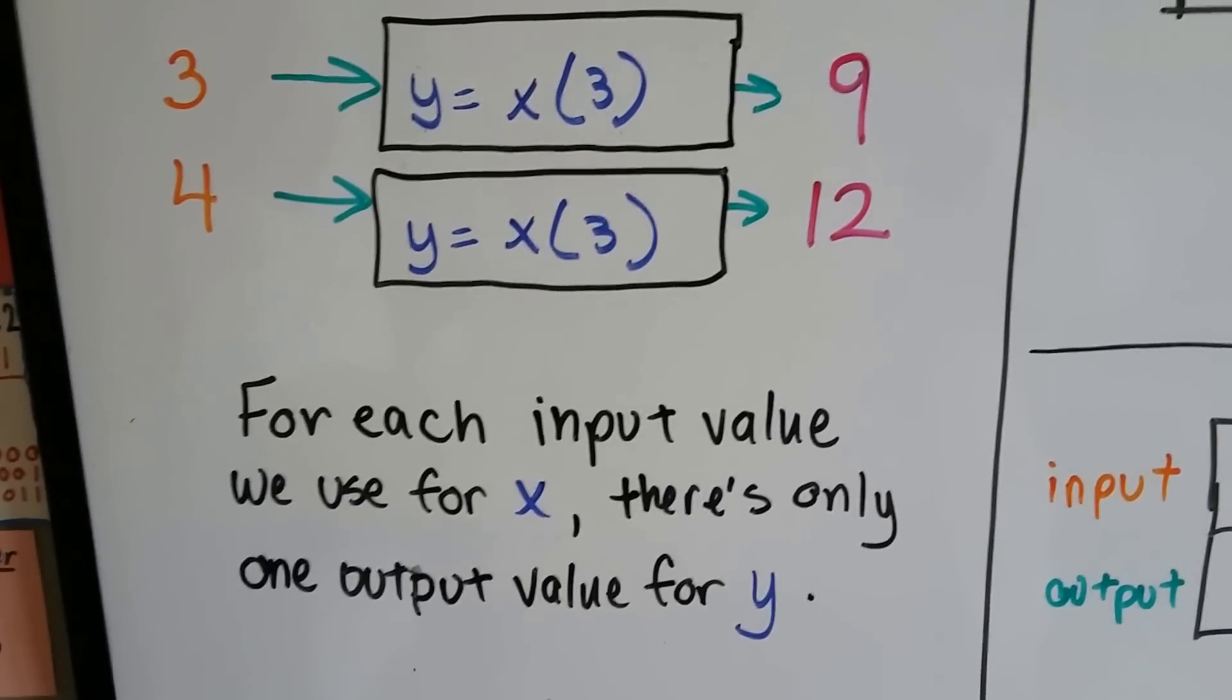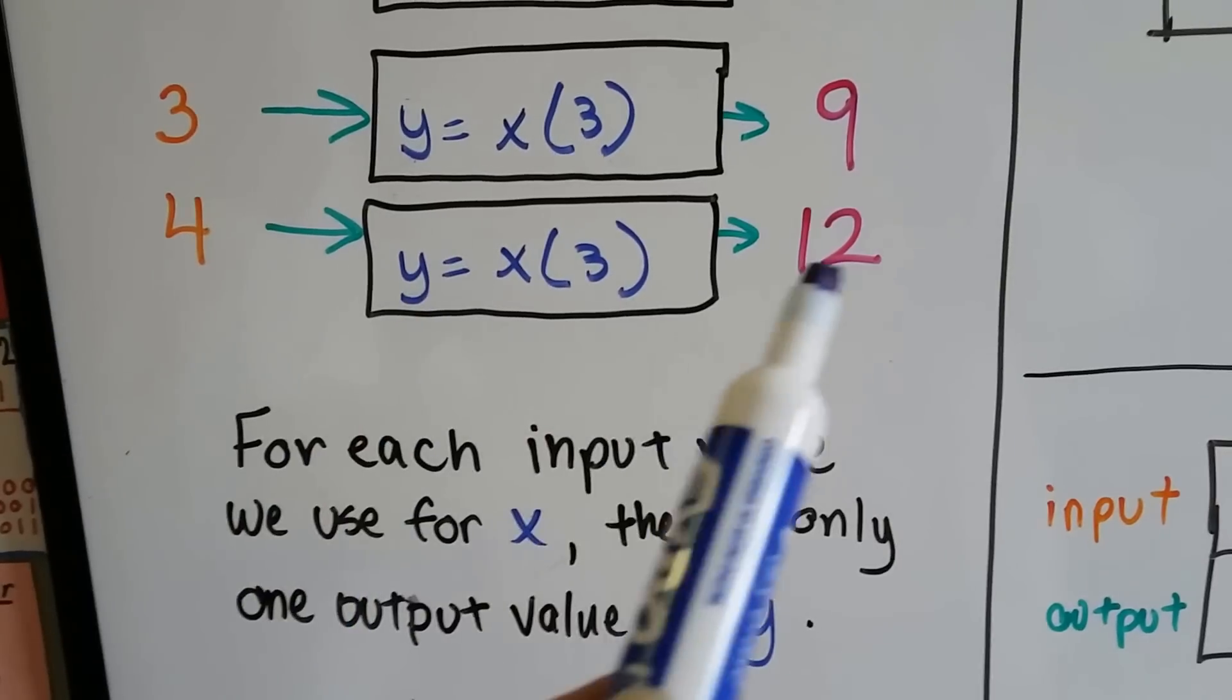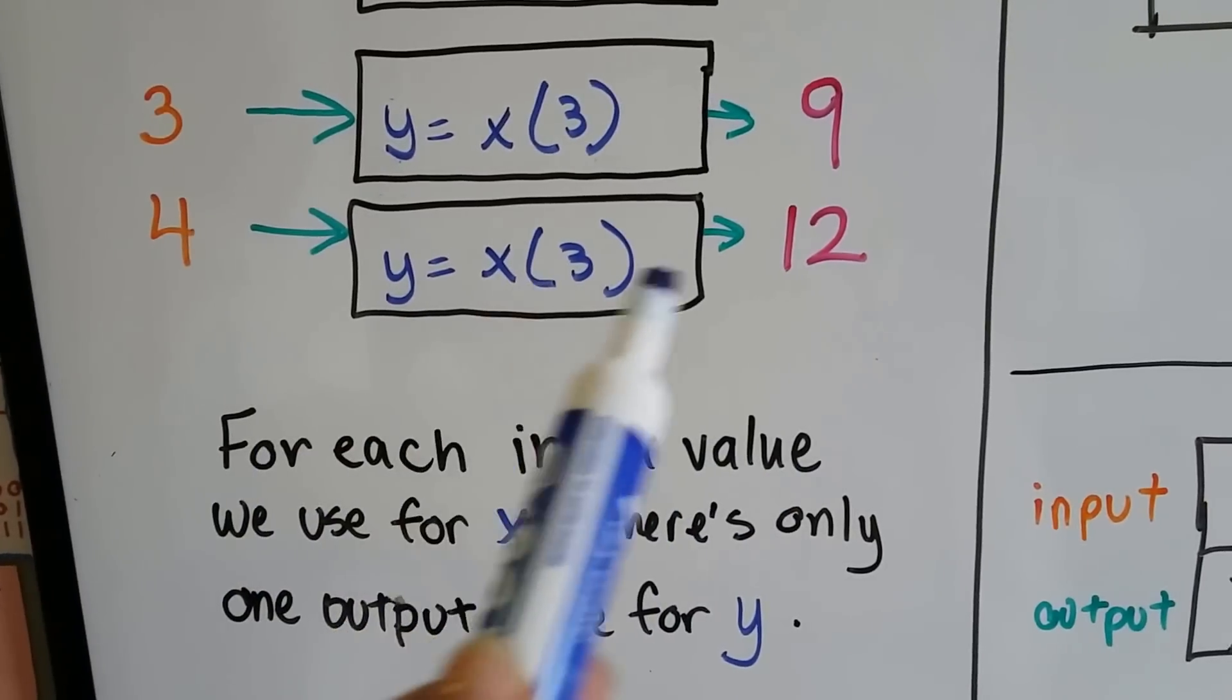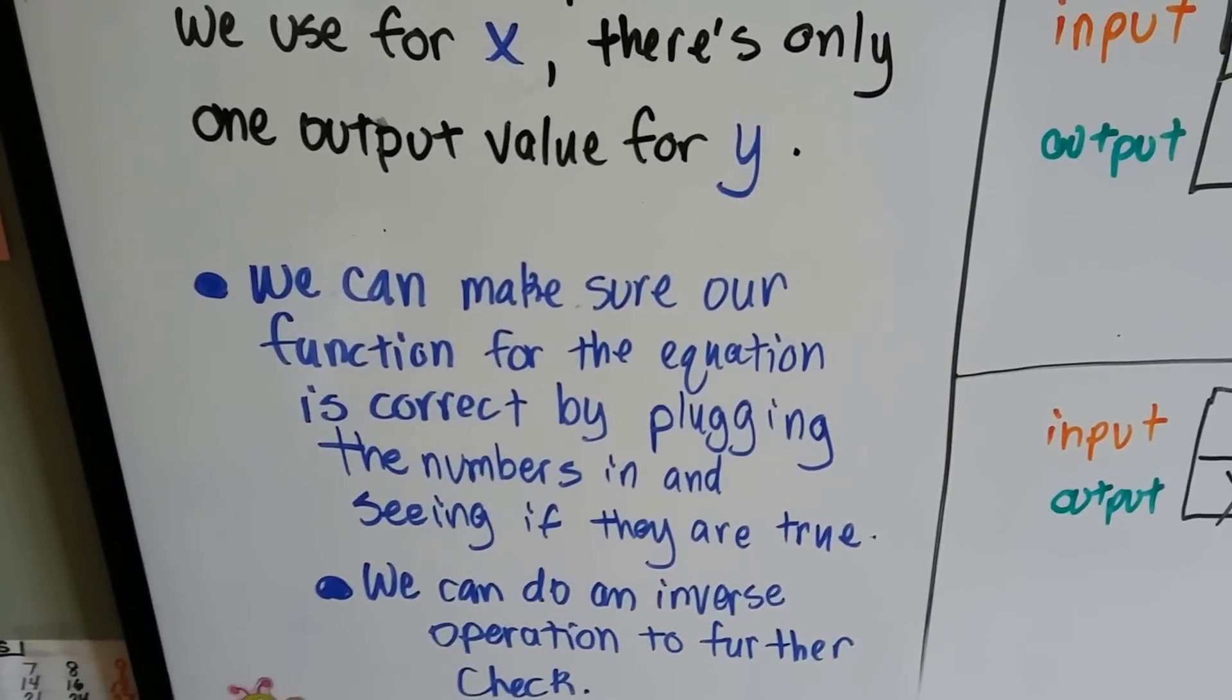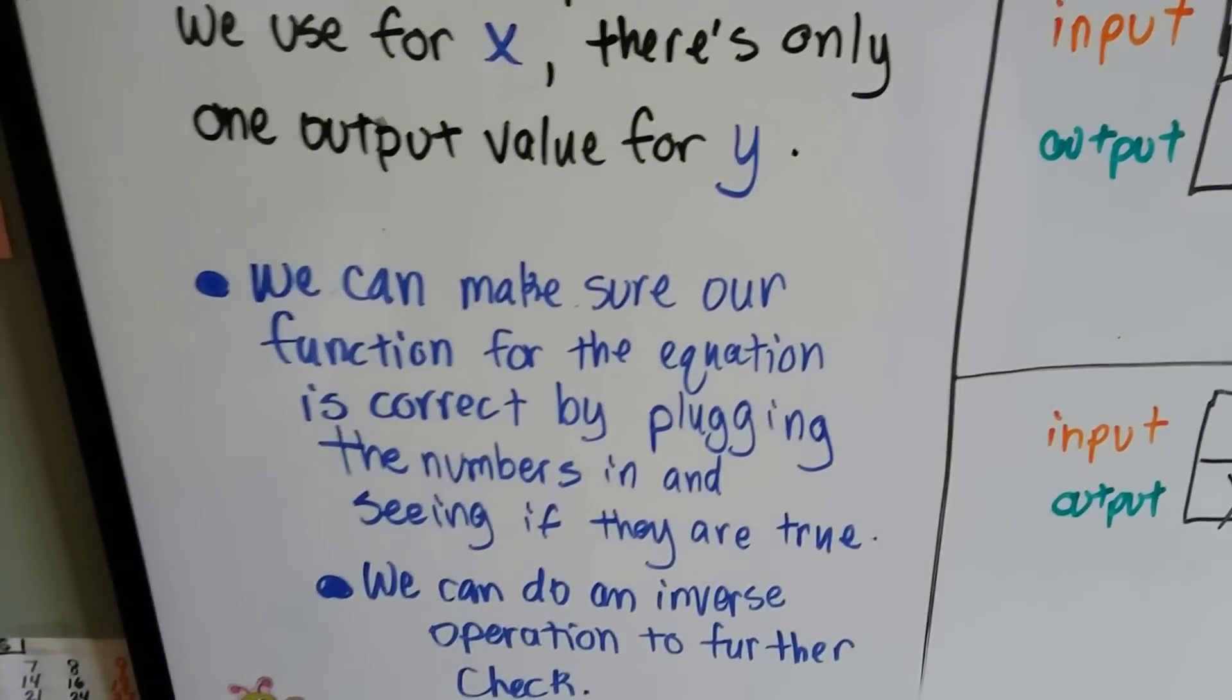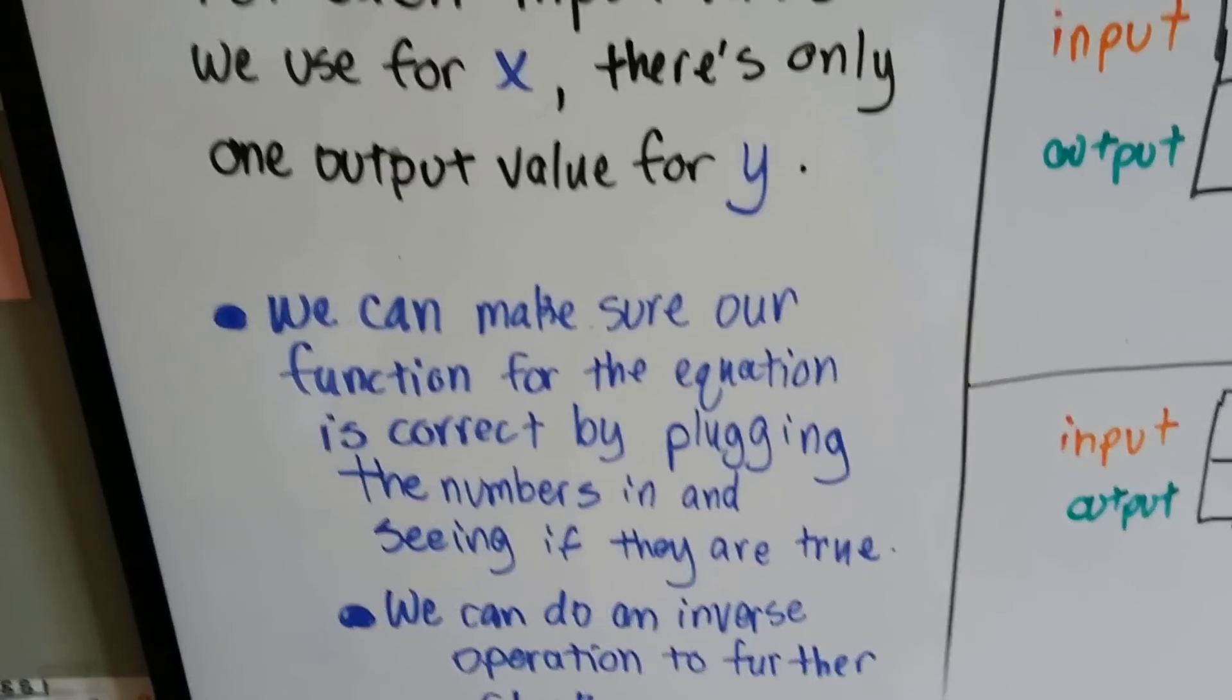For each input value we use for x, there's only one output value for y. y can't equal anything else if we put 4 in. y can only be 12. We can make sure our function for the equation is correct, our rule, by plugging the numbers in to see if they're true, and we can also do an inverse operation to further check it.